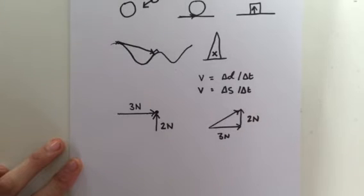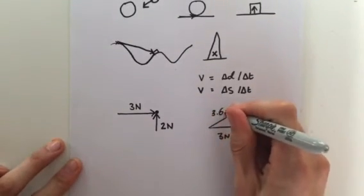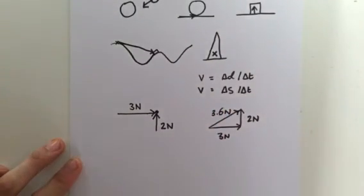So in the example given, the size of the resultant force is 3.6 newtons. And the direction is at an angle of 34 degrees to the 3 newton force. These figures were obtained by a scale drawing.